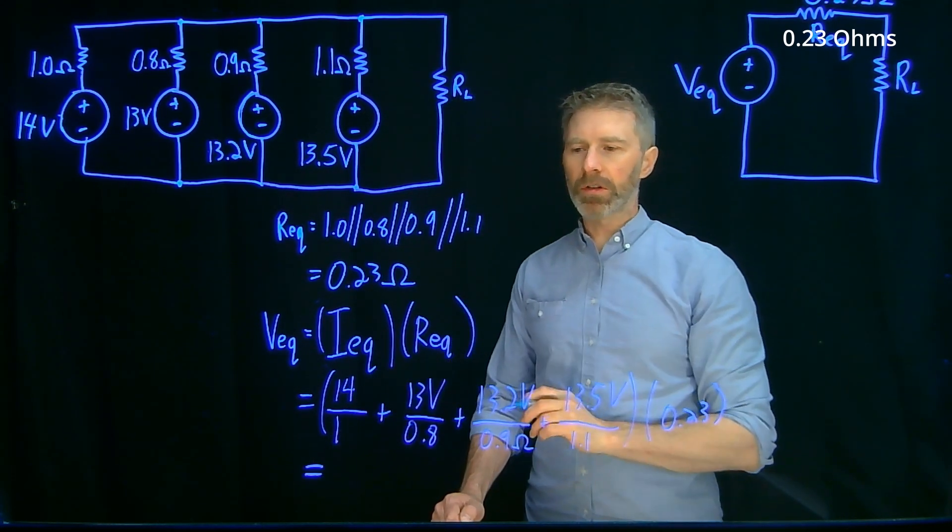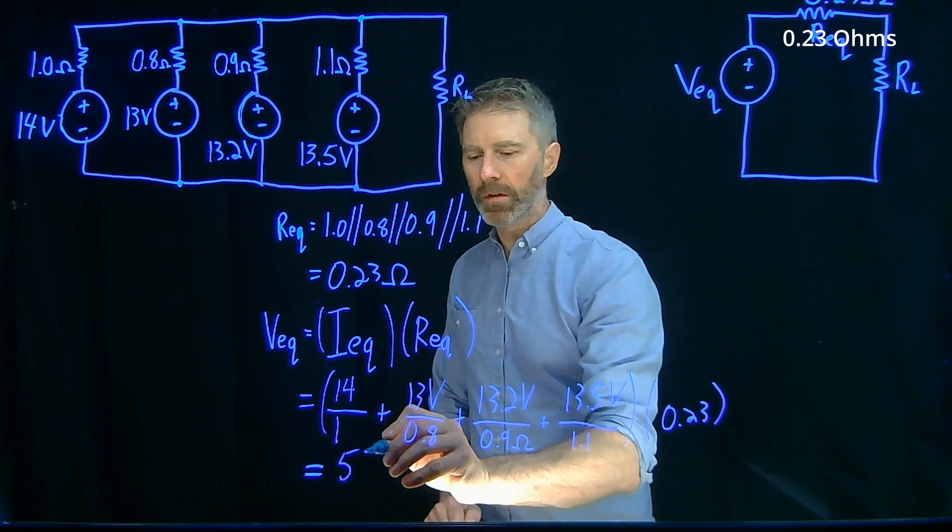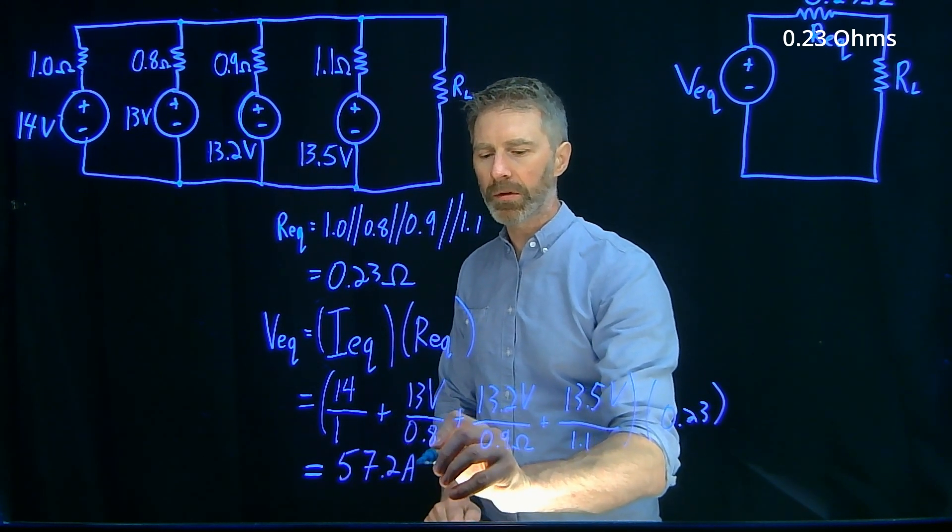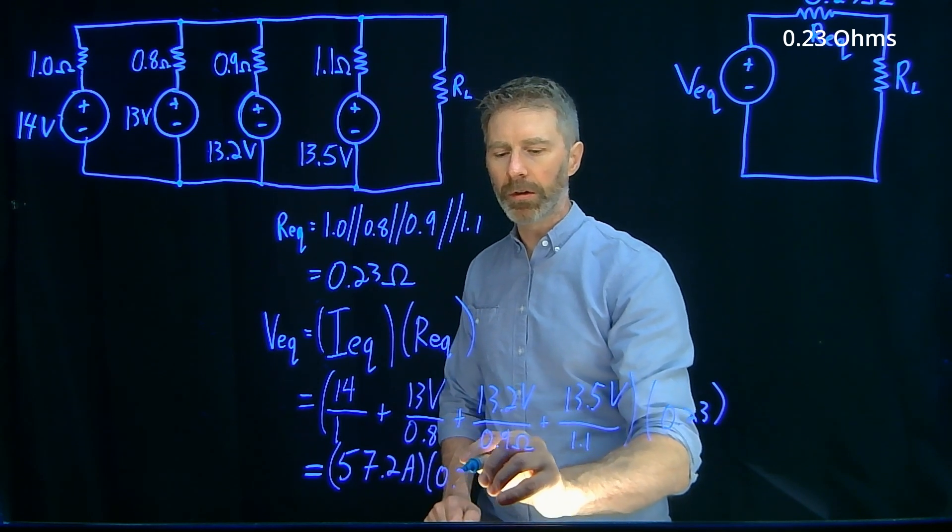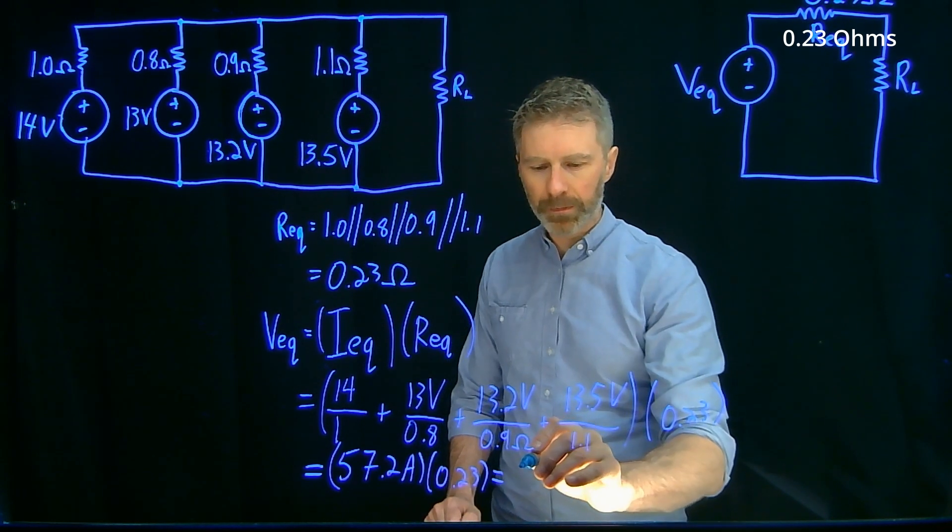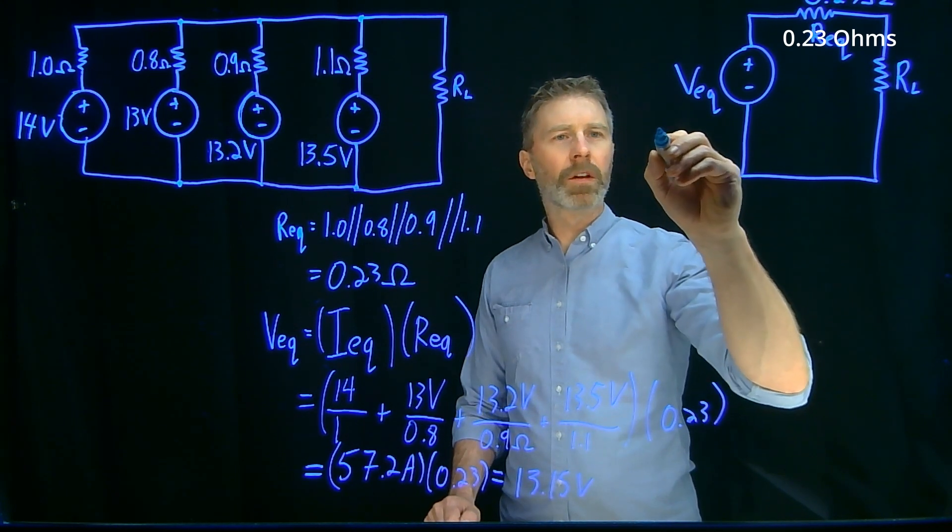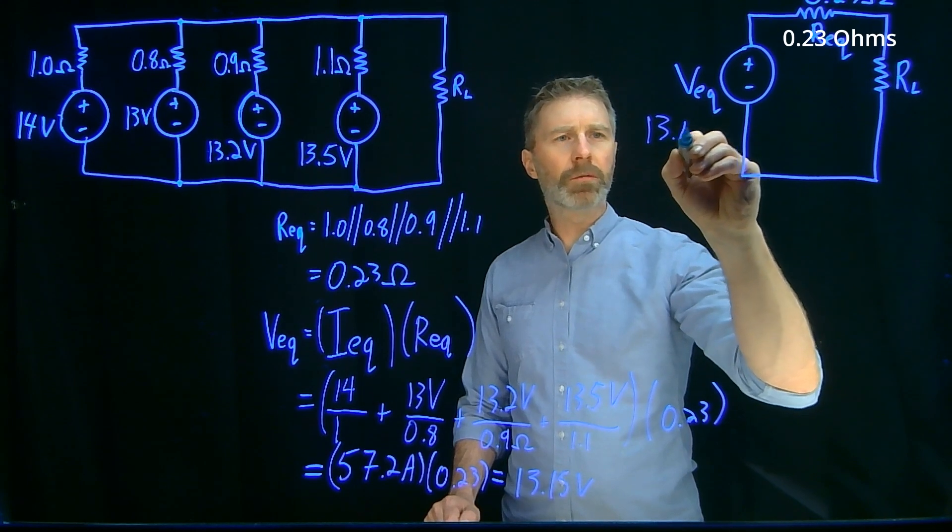Summing all of these current sources together gives me 57.2 amps. And I multiply that by 0.23 ohms, and that works out to 13.15 volts. So my equivalent voltage is 13.15 volts.